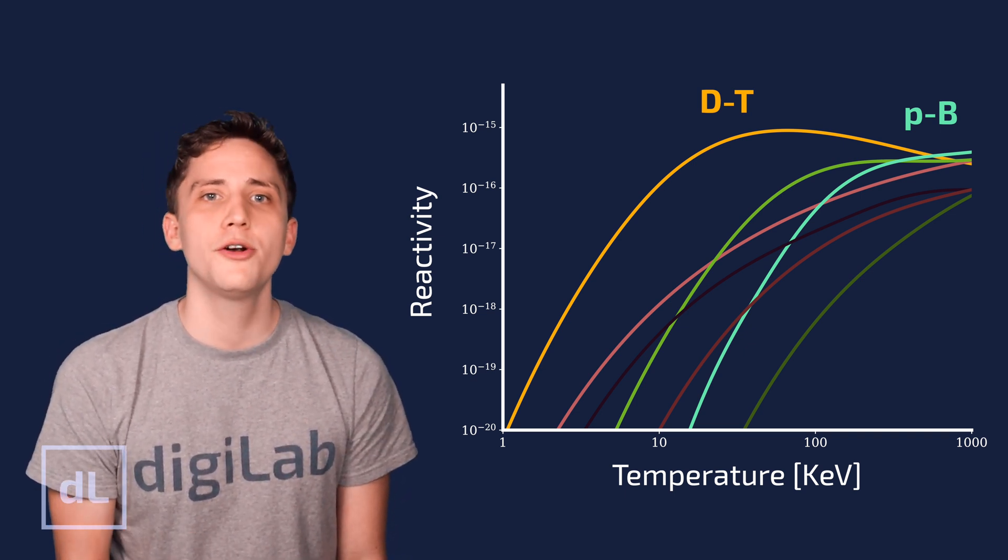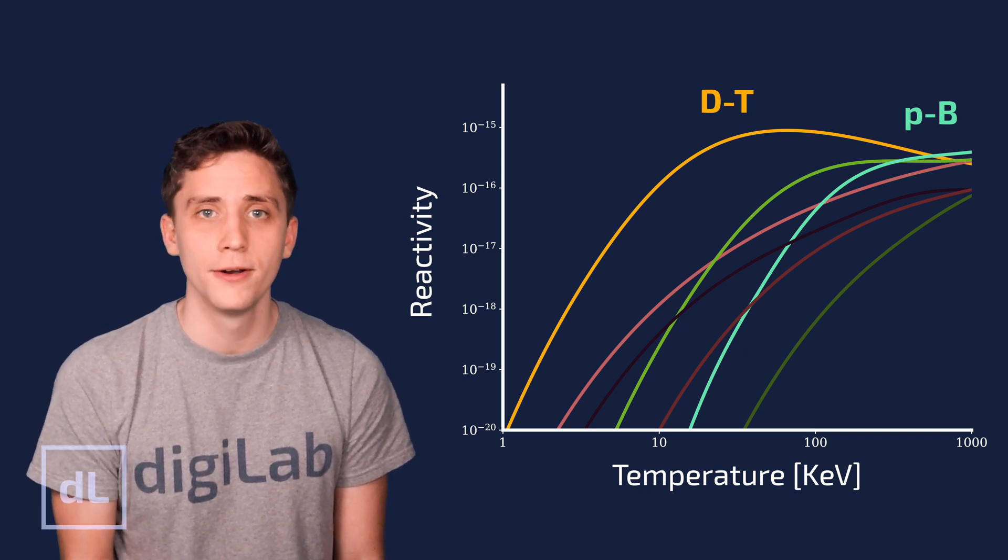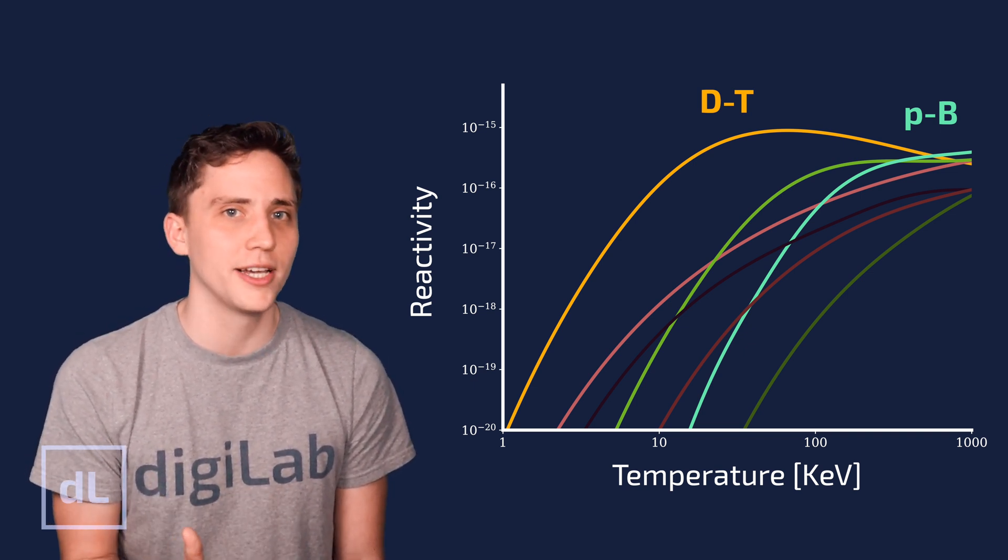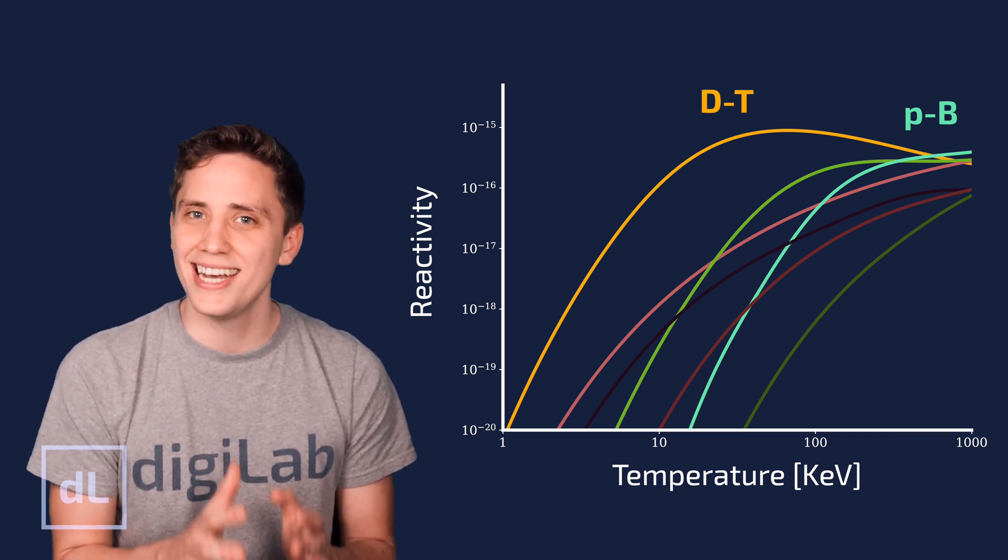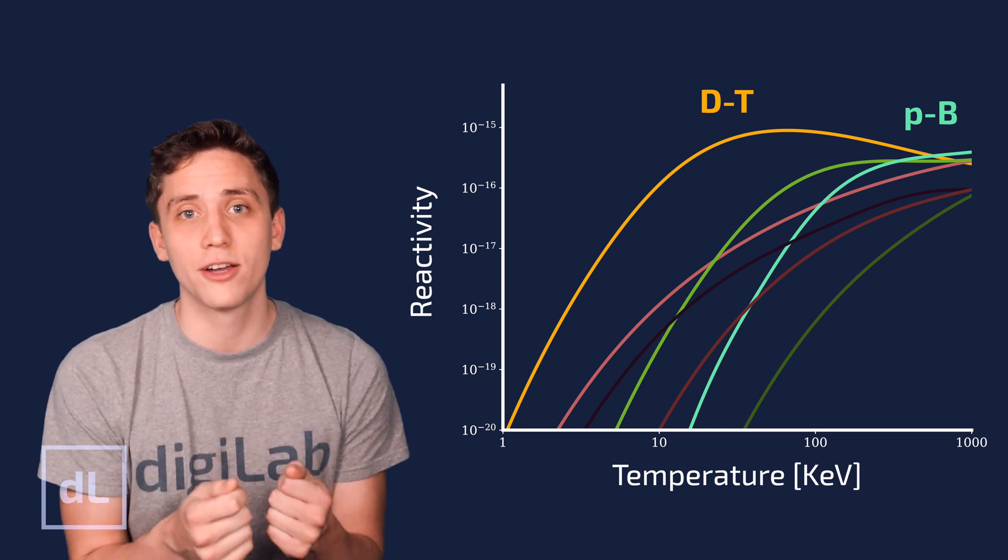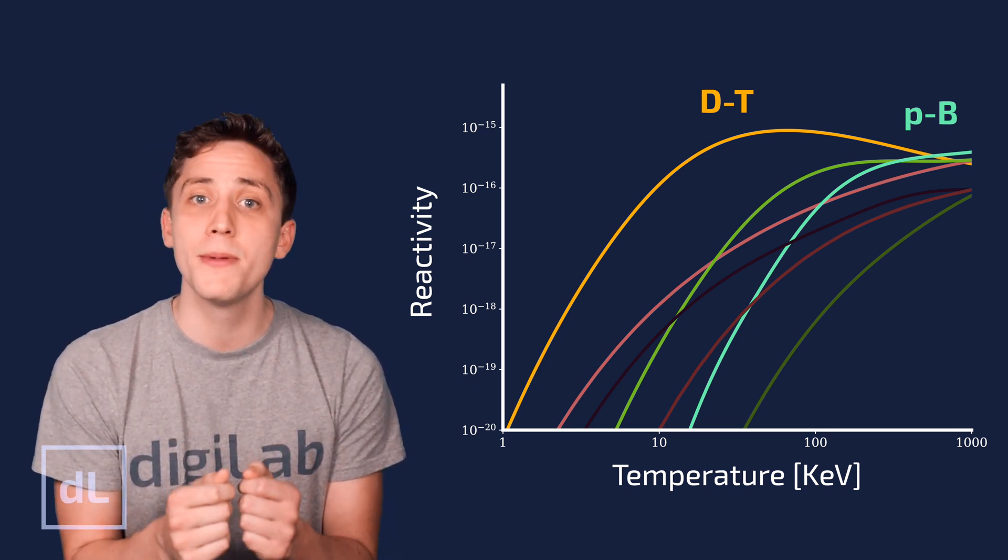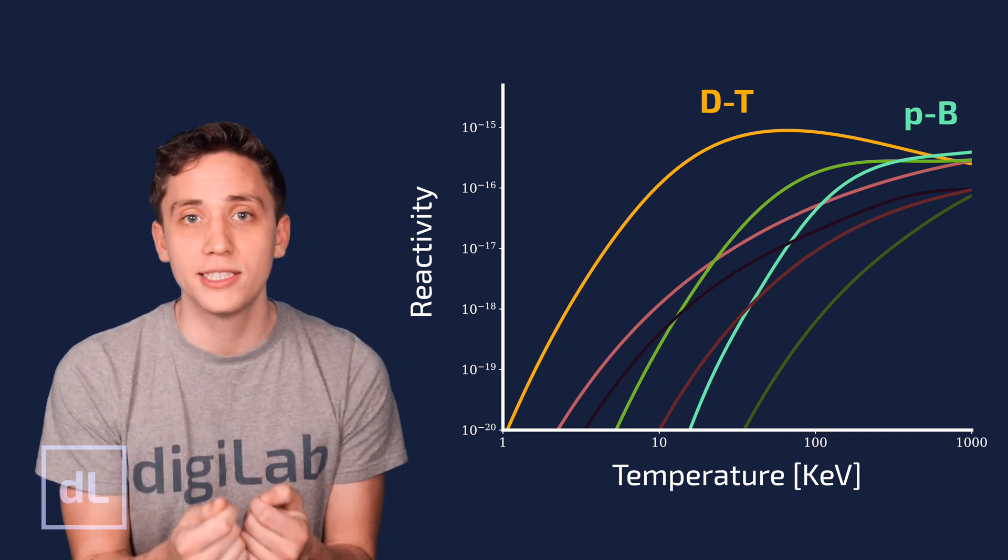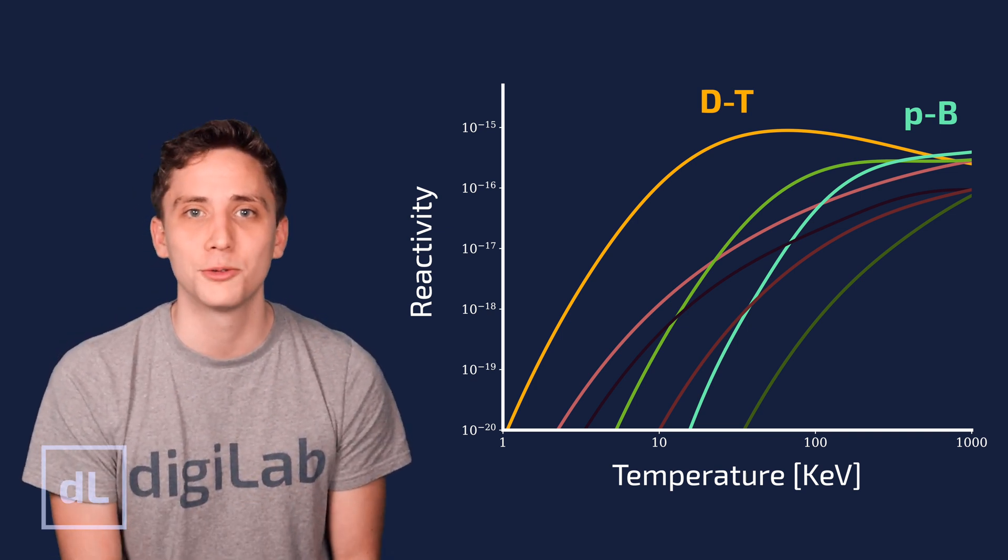Secondly, though deuterium is naturally occurring and is quite abundant in things like seawater, tritium is not naturally occurring and is a radioactive isotope of hydrogen, meaning it needs to be handled carefully. And because it's not naturally occurring, any successful fusion power plant that operates with DT needs to make its own self-sufficient source of tritium. That's going to be an important topic, which we'll cover later.